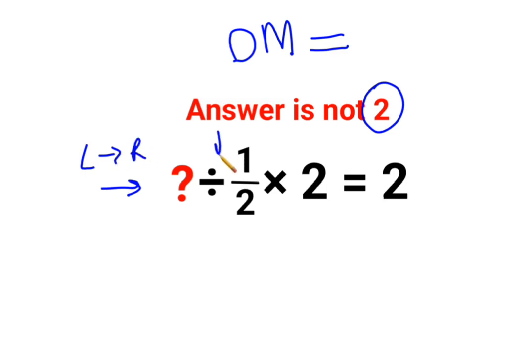Whatever operation happens first from your left hand side has to be done first. So here we have question mark divided by 1 by 2. Now whenever you have division you will follow the rule of KCF where K stands for keeping the first number as it is which is question mark.